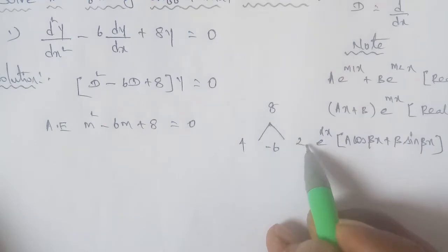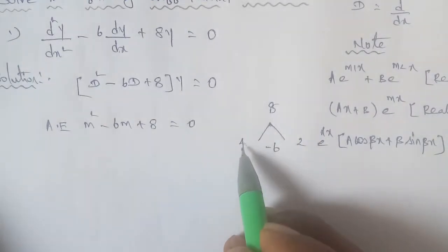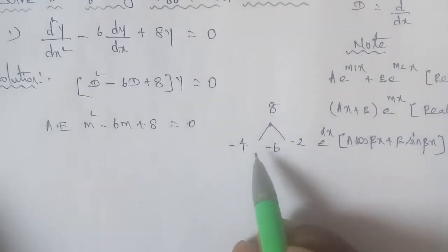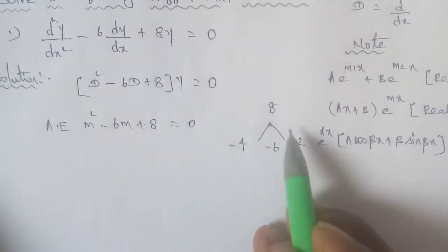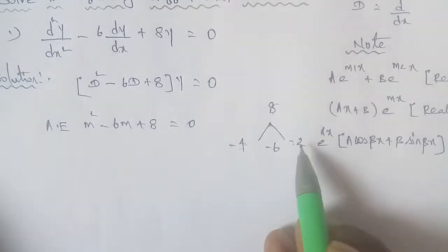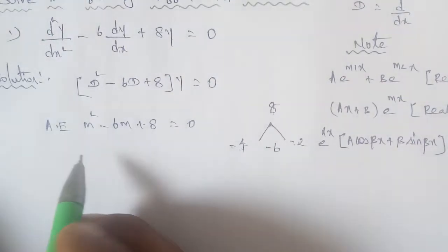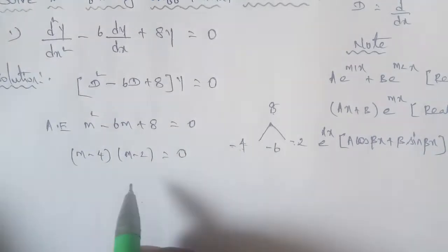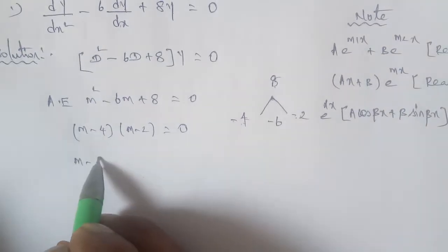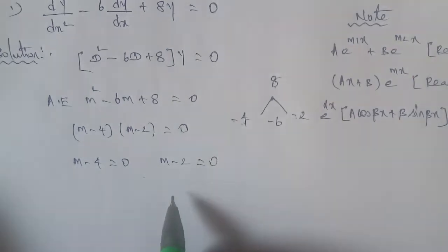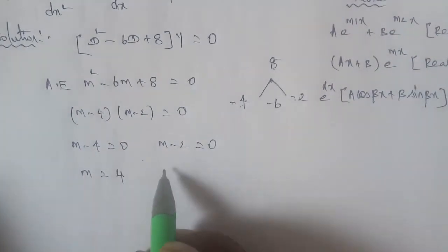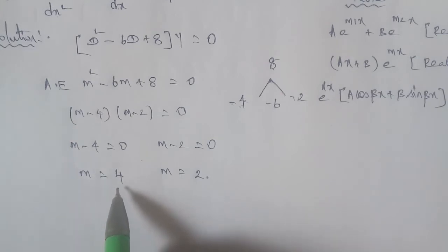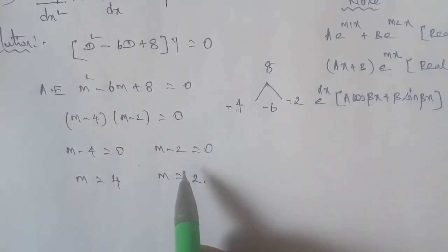The numbers are minus 4 and minus 2. Check: minus 4 plus minus 2 equals minus 6, and minus 4 times minus 2 equals plus 8. So the factored equation is (m minus 4)(m minus 2) equals 0. If m minus 4 equals 0, then m equals 4. If m minus 2 equals 0, then m equals 2. So m equals 4 and m equals 2.